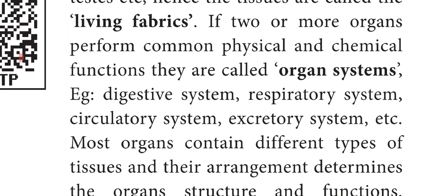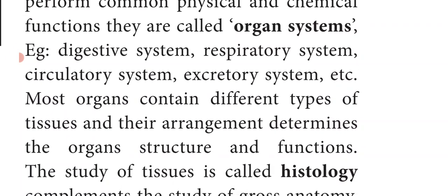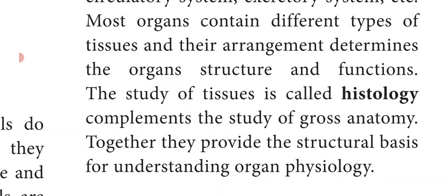Examples of organ systems are the digestive system, respiratory system, circulatory system, and excretory system. Most organs contain different types of tissues, and their arrangement determines the organ's structure and functions. The study of tissues is called histology.